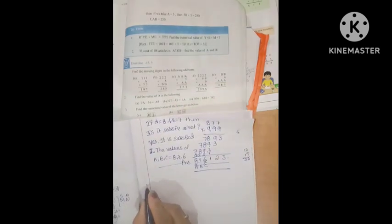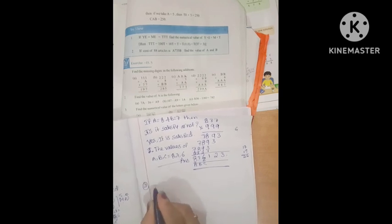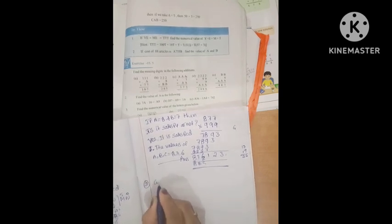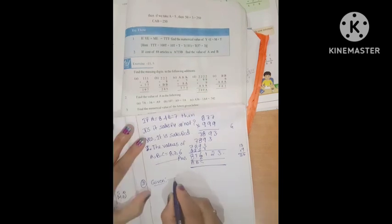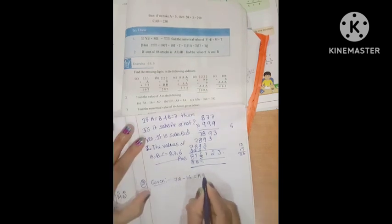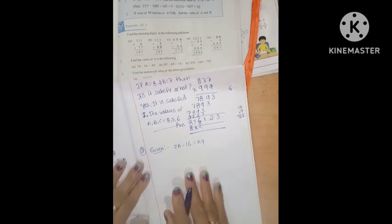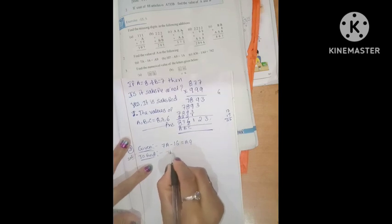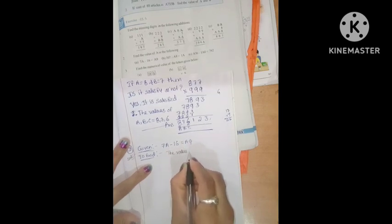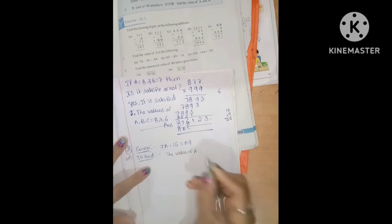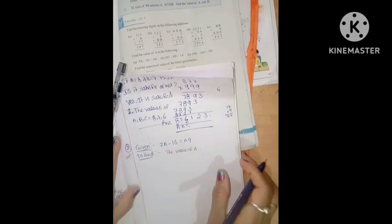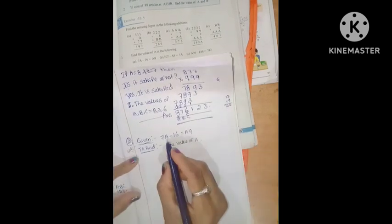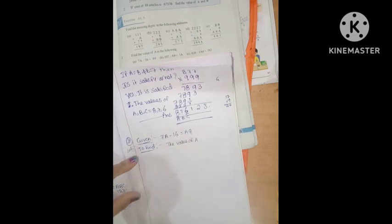First, given: 7A minus 16 equal to A9. This is the given. Find the value of A. Let the solution for this problem: 7A minus 16 equal to A9.